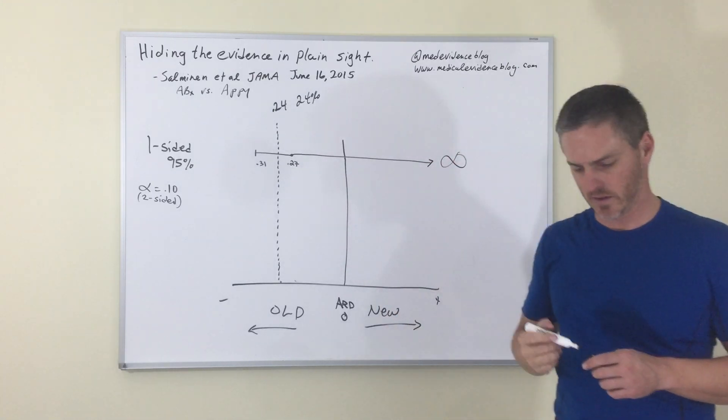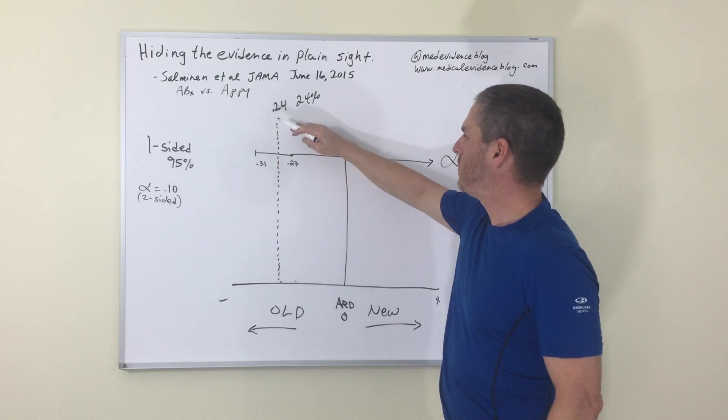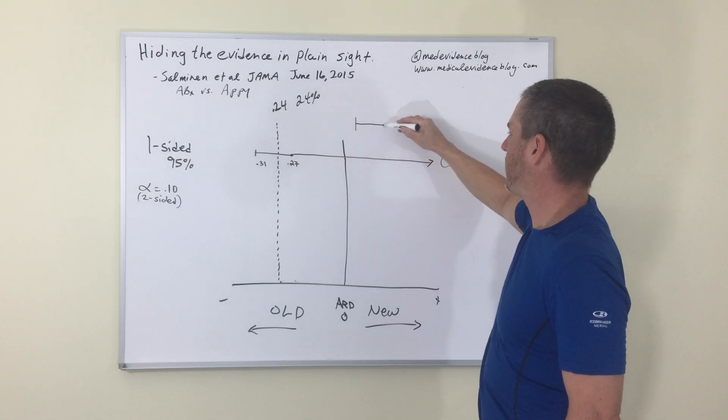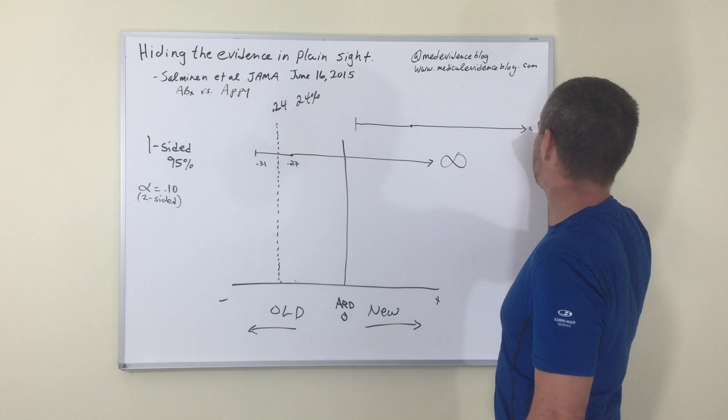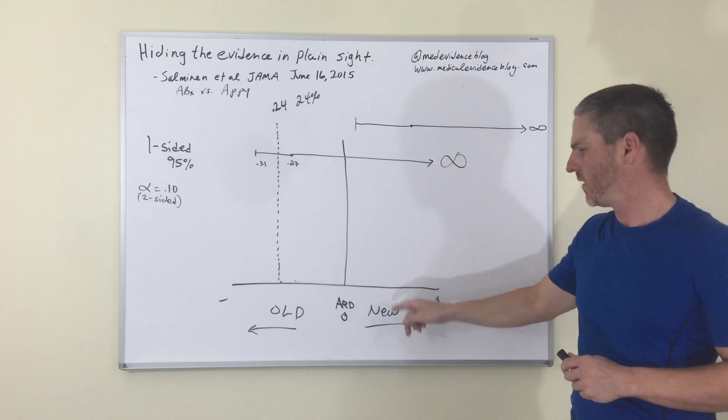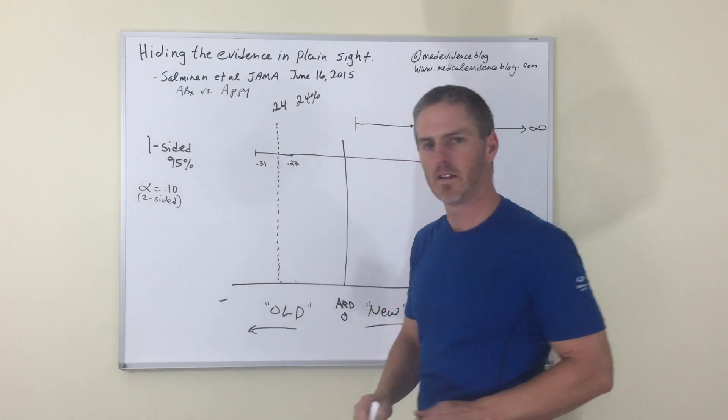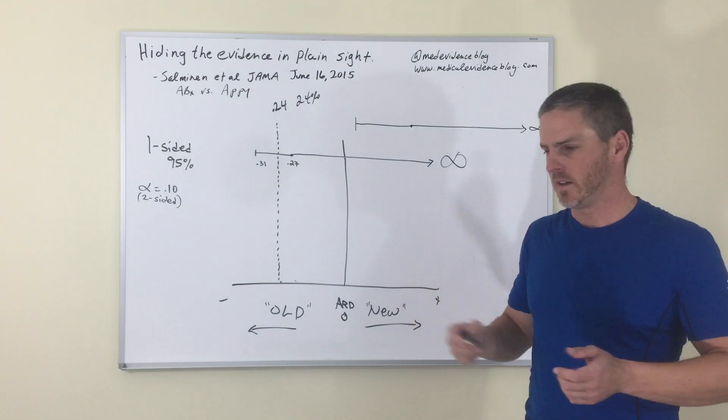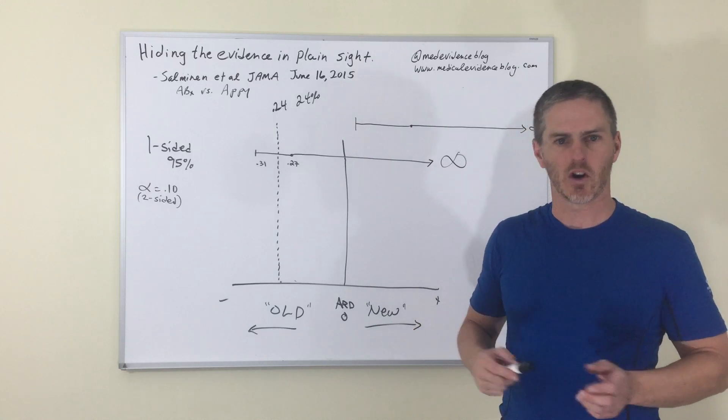So notice what problem that creates. How do you get a statistically significant result in this study? The only confidence bound that you have to work with is the lower one. So the only way that you can get a positive result is to push the results over here such that the lower bound of the confidence interval falls to this side of unity. And then you have a limitless infinite upper bound again. So this trial can only give a statistically significant result in favor of the new therapy.